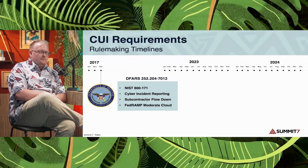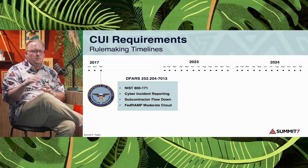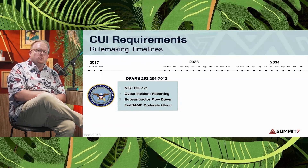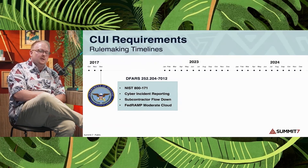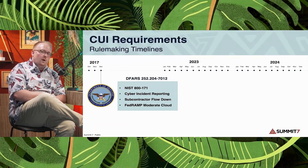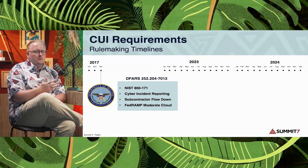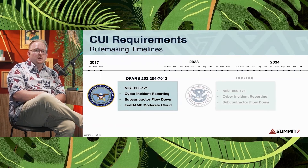CUI requirements — lots of logos on the screen. Some of those are enforcing CUI handling or safeguarding requirements, some are not yet. Let's talk about DFARS 7012. It has four major components: NIST 800-171 — 110 controls to be implemented with 320 assessment objectives — cyber incident reporting requiring you to report within 72 hours of discovery of an incident, subcontractor flow-down ensuring your subs protect CUI to the same requirement, and the FedRAMP requirement.